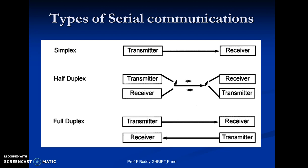Duplex transmissions can be half or full-duplex depending on whether or not the data transfer can be simultaneous. If data is transmitted one way at a time, it is referred to as half-duplex. If the data can go both ways at the same time, it is full-duplex. Full-duplex requires two wire conductors for the data lines — one for transmission and one for reception — in order to transmit and receive data simultaneously.